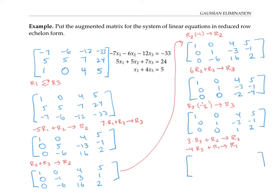I'll copy the third row down as it is. For the second row, I need three times row three plus row two: that's going to give me zero, one, zero, and three times two plus negative one is six minus one, which is five. Now the first row gets replaced by negative four times r3 plus r1: that's one, zero, zero, and negative four times two is negative eight plus five gives me negative three. I now have a matrix in reduced row echelon form.